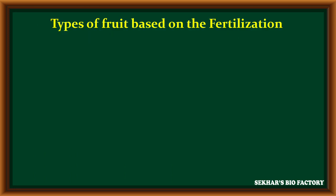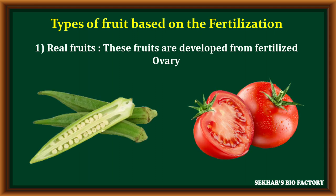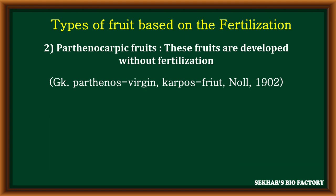Depending upon fertilization, fruits are of different types. The first type is real fruits, developed from the fertilized ovary — most vegetables and fruits are examples. The second type is parthenocarpic fruits. These parthenocarpic fruits are also developed from the ovary but without fertilization.